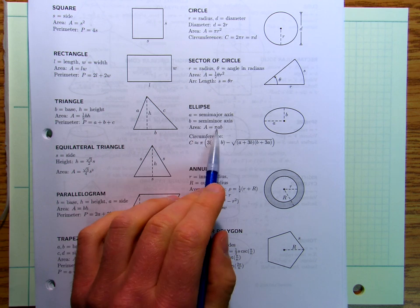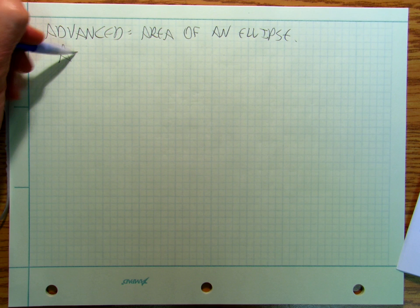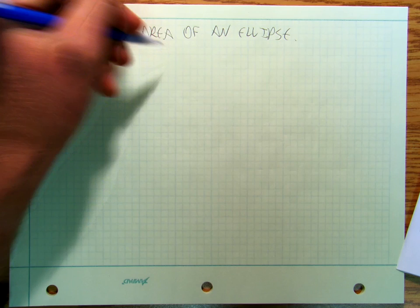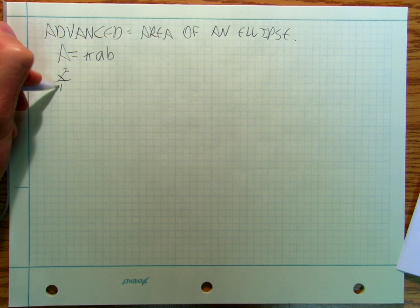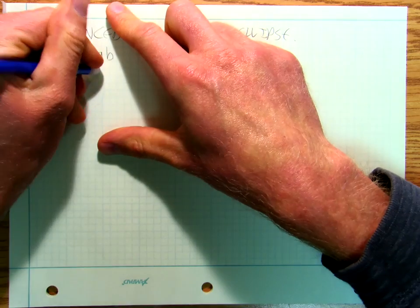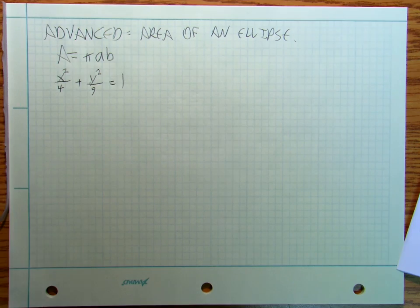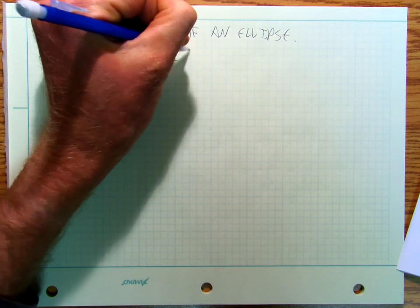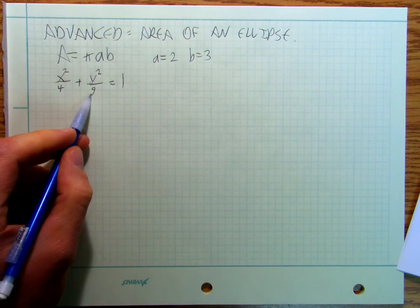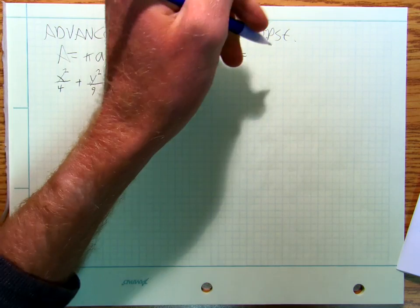Right here it says that the area of an ellipse is πab, so area equals πab. If I've got x² over 4 plus y² over 9 equals 1, then my A is equal to 2 and my B is equal to 3 — square root of 4 is 2, square root of 9 is 3. So my area is going to be equal to 6π.